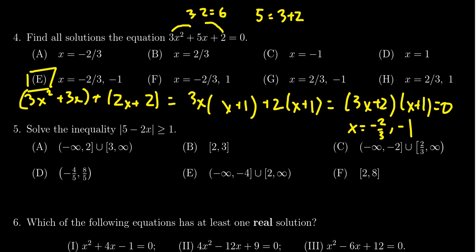Had we completed the square or used the quadratic formula our calculation would have looked a little bit different but when we were done we would have still had these same two solutions negative 2 thirds and negative 1.